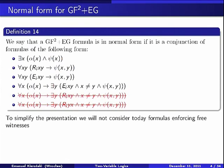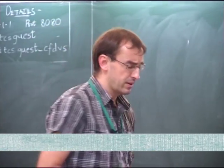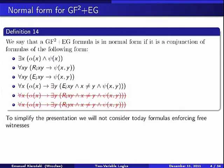In today's talk, yesterday we considered the general satisfiability problem for the two-variable guarded fragment with equivalence guards. Today we will consider the finite satisfiability problem. To simplify the presentation, I will not consider those conjuncts which may require witnesses connected not necessarily by equivalence relations. We can only require witnesses inside equivalence classes. This simplification is not crucial — it is easy to add those two types of conjuncts, and it will be left as an exercise.